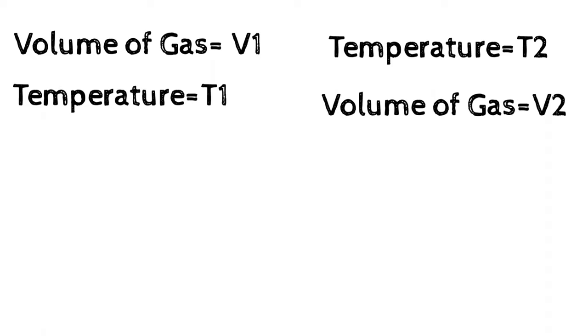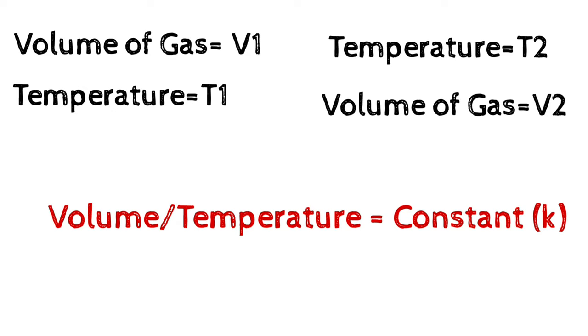So from the condition that we have learned, the ratio of volume and temperature is always a constant in this condition. We can write that V1 by T1 equals constant, and similarly V2 by T2 equals constant.